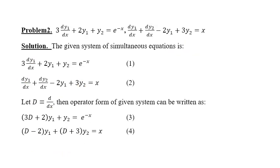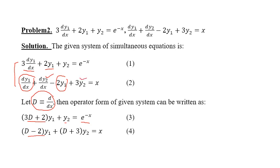Another simultaneous system example with y₁ and y₂: Let capital D = d/dx. In the first equation, collect y₁ terms to get (3D + 2)y₁ and y₂ remains as such, equal to e^(−x). In the second equation, collect y₁ terms to get (D − 2)y₁ common, and collect y₂ terms to get (D + 3)y₂ common, equal to 0. This is how we write a system of linear differential equations in operator form.